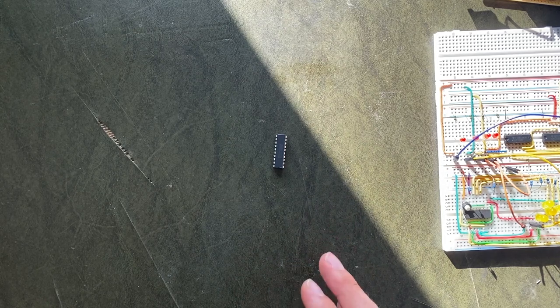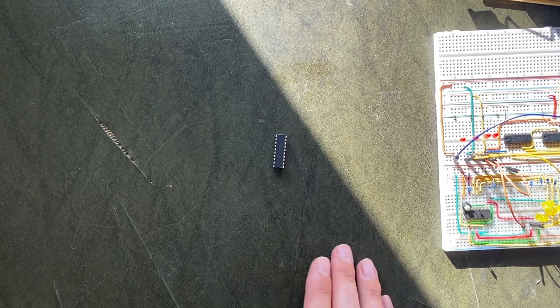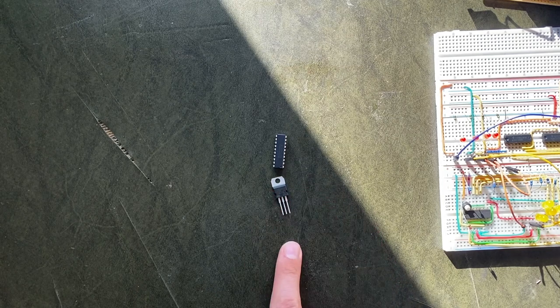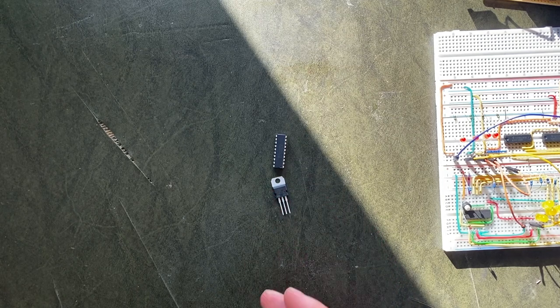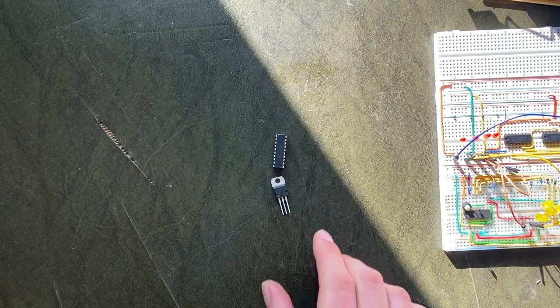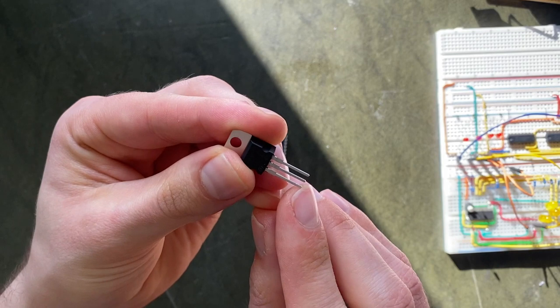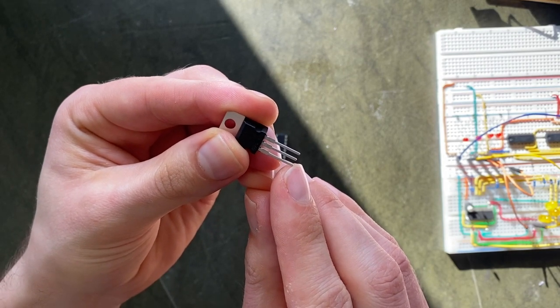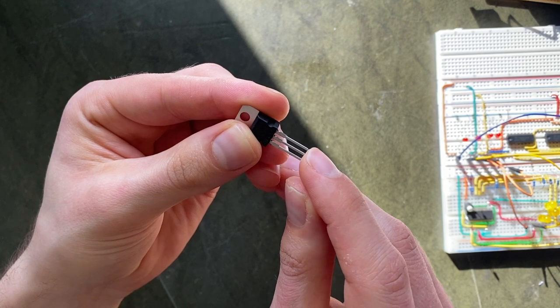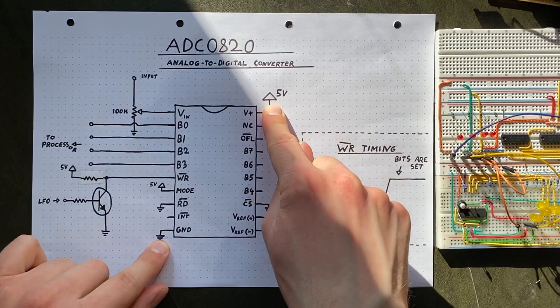Since we don't need something as odd and specific as our DAC's reference voltage, we can go for a simpler solution, this 7805 voltage regulator. It will transform our 12V supply voltage into a steady 5V. The setup is fairly simple. This pin here is the voltage input, while this one needs to be connected to ground. And from here we get our 5V. So the power and ground pins are taken care of.